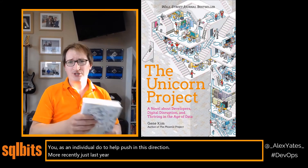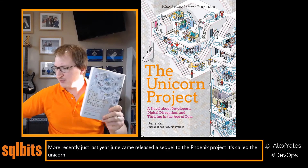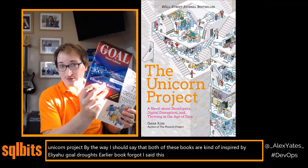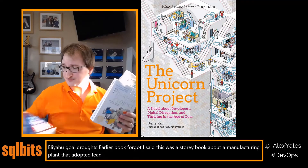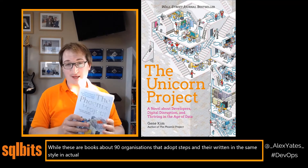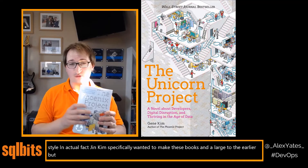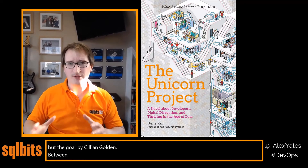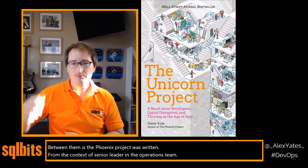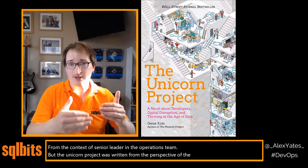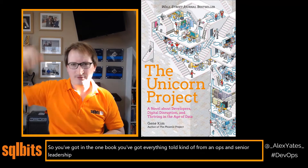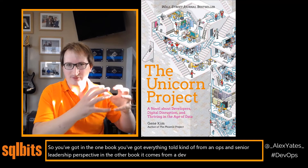More recently, just last year, Gene Kim released a sequel to The Phoenix Project called The Unicorn Project. Both books are inspired by Eliyahu Goldratt's earlier book The Goal — that storybook about a manufacturing plant adopting lean — while these are books about an IT organisation adopting DevOps, written in the same style. Gene Kim specifically wanted these books to be an homage to The Goal. The difference is The Phoenix Project was written from the context of a senior leader in the operations team, while The Unicorn Project was written from the perspective of the frontline developer on the dev team.